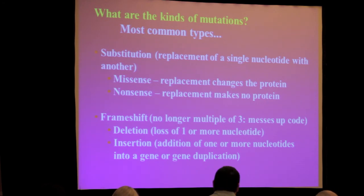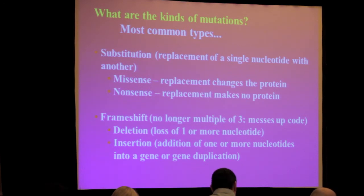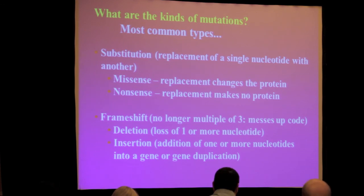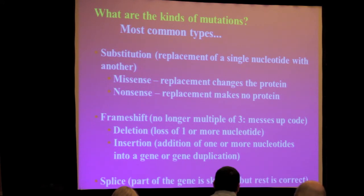A frameshift mutation — another term you'll hear — occurs when you have a deletion of one or more base pairs, or an insertion or addition of one or more base pairs. That shifts the reading of the gene because you've changed the code, and you no longer have the same amino acids coming out. You have a whole string of different ones, and eventually it gets to a stop codon that stops the reading. If the frameshift stays in a pattern of threes, it doesn't really do much, but if it gets off that cycle of three, it's going to get messed up. A splice mutation is a situation where part of the gene is skipped but the rest is correct.